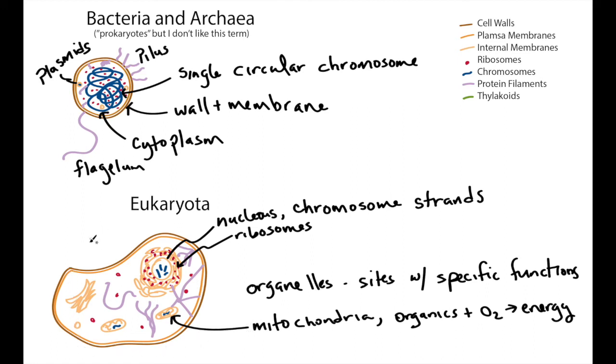And then eukaryotes often also have Golgi apparatus, which helps shape proteins, and they have a lot of these protein filaments that structure the cells. So these strands and filaments hold the nucleus in place, the mitochondria in place, and help shape the cell structure.